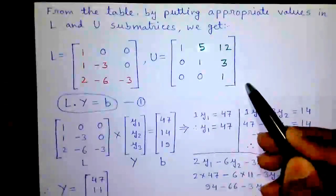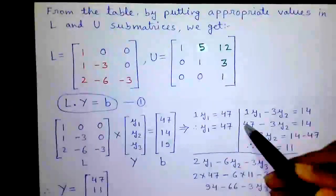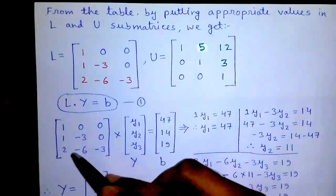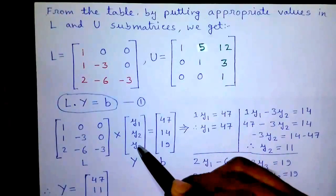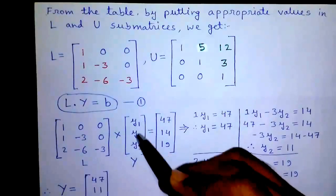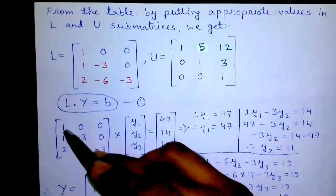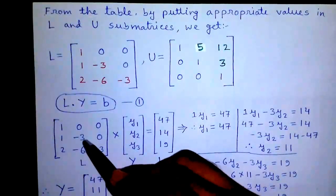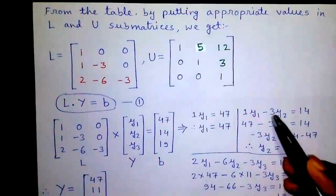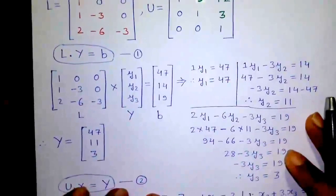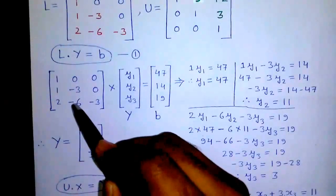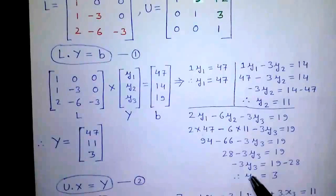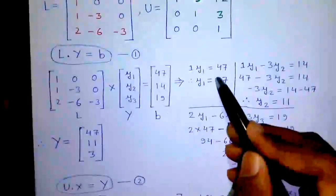Up to this point it's called LU decomposition by Crout's method. Now the actual LU factorization begins. Using the first formula: matrix L into matrix Y equals matrix B. Multiplying matrix L into matrix Y, from row 1: 1 into Y1 equals 47, so Y1 equals 47. From row 2: 1 into Y1 minus 3 into Y2 equals 14, giving Y2 equals 11. From row 3: 2 into Y1 minus 6 into Y2 minus 3 into Y3 equals 19, giving Y3 equals 3. So matrix Y equals 47, 11, and 3.